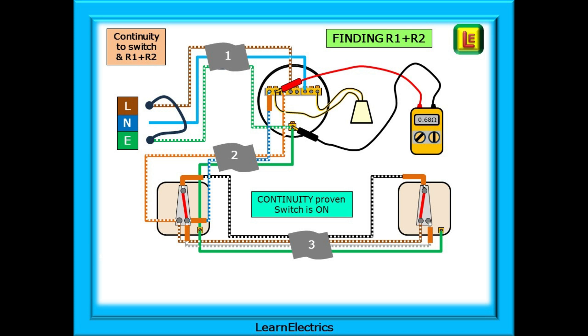At switch number one we go along another brown wire back to the ceiling rows. Out of the ceiling rows on a brown wire again to the link at the consumer unit. From the link along the earth and back to the earth terminal at the ceiling rows. The test current has completed a path around the circuit and continuity is proved.